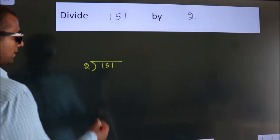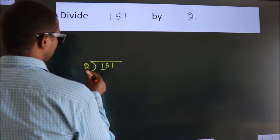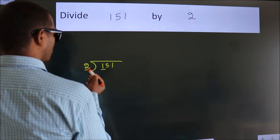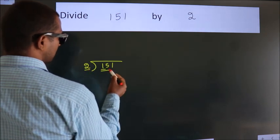Next. Here we have 1, here 2. 1 smaller than 2. So, we should take 2 numbers. 15.